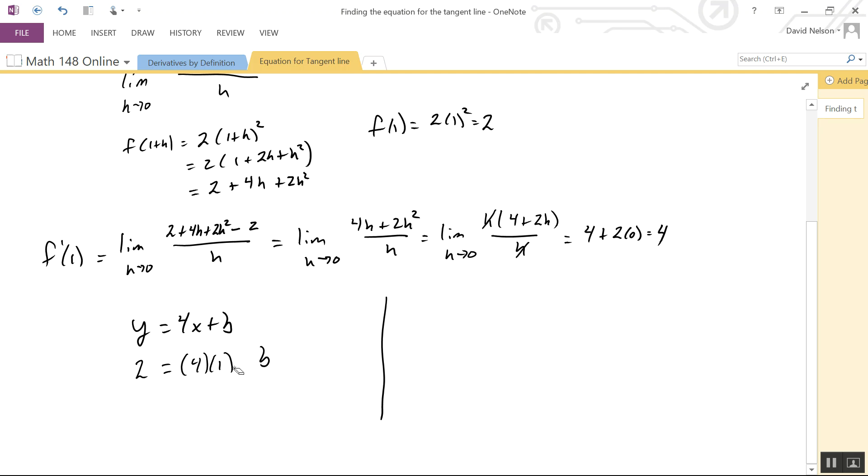If I plug those values in, it gives me an equation I can solve for b. 2 = 4 + b, so subtract 4 from both sides and you get b = -2.